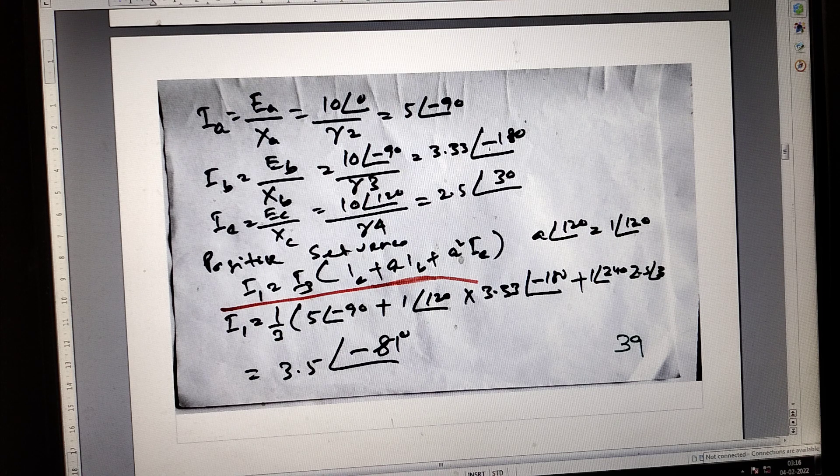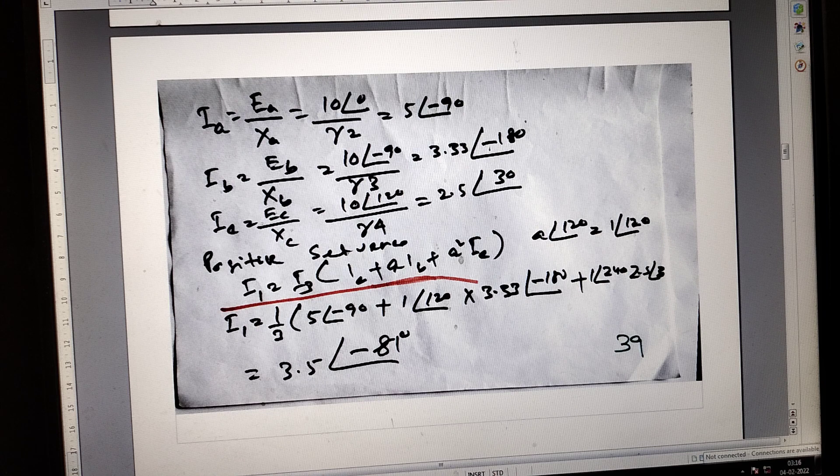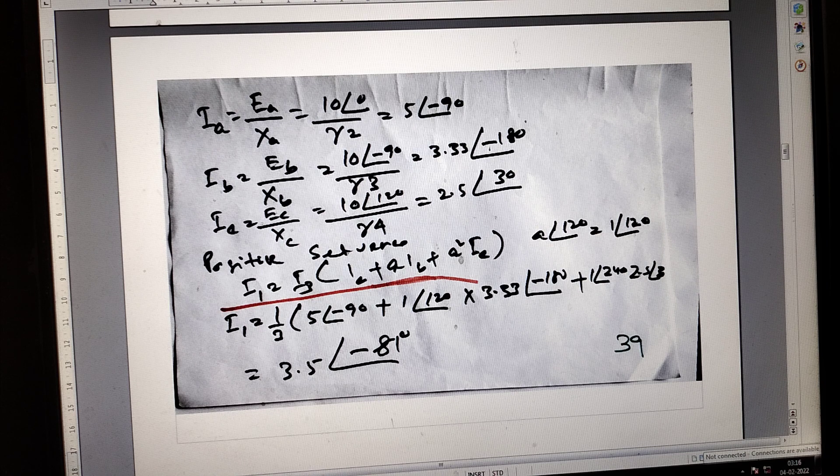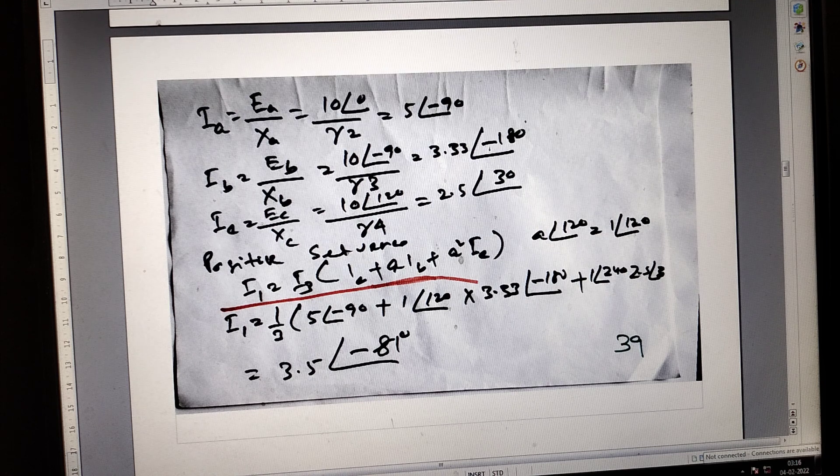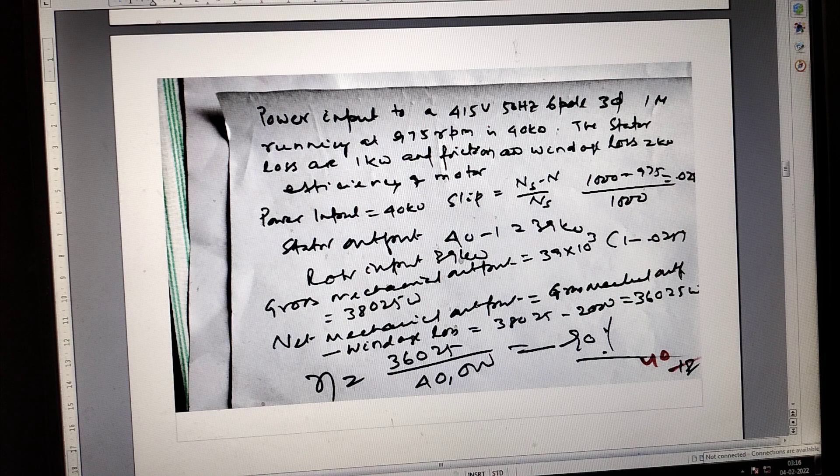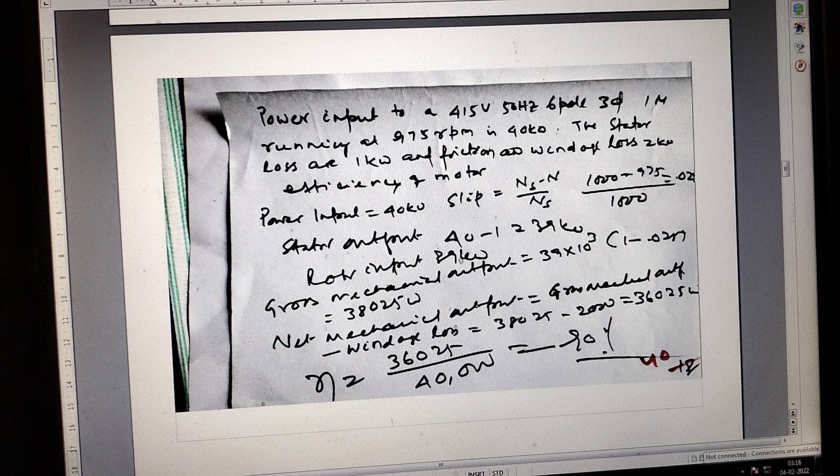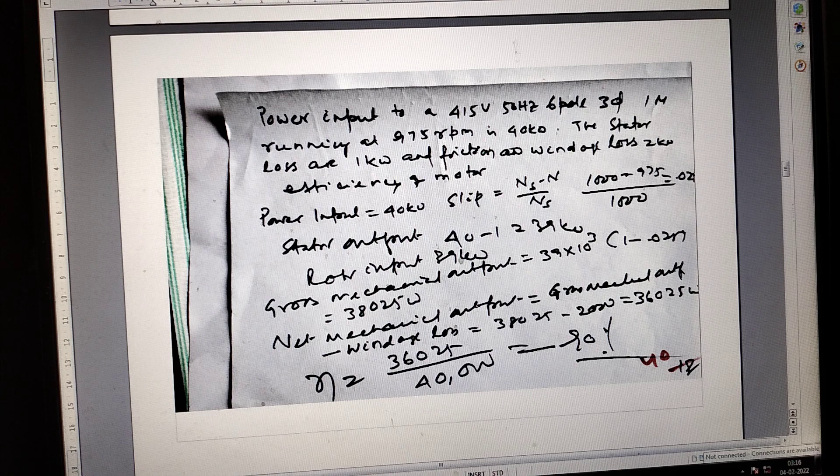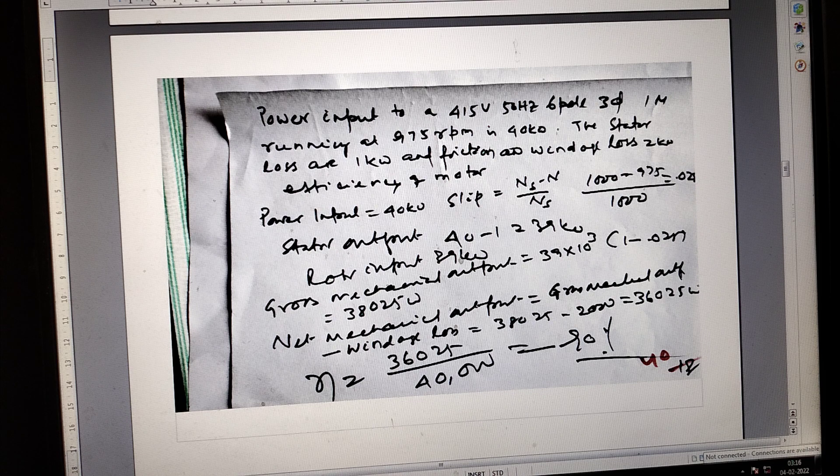Here the power input for induction motor: after stator loss, stator output equals rotor input, and gross mechanical output equals rotor input times one minus slip. It's 39 kilowatts times one minus slip.